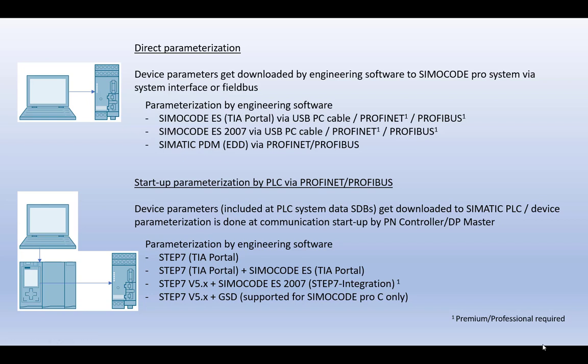Especially in the SIMATIC environment, there are two possibilities for device parameterization. The common way is the direct parameterization using engineering tools like SimulCode ES TIA Portal, SimulCode ES 2007, or SIMATIC PDM. All these tools allow a direct one-by-one download function via the USB PC cable, Profinet, or Profibus interface.